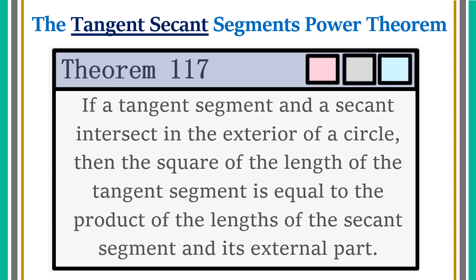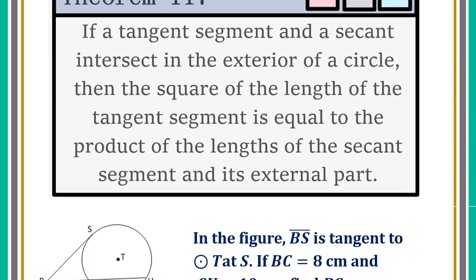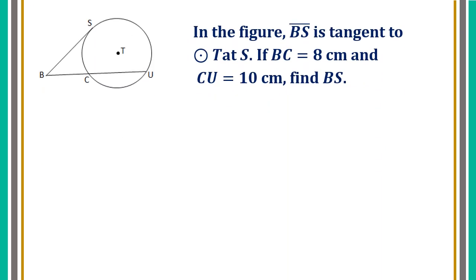Now, let us have sample illustration for this. In the given figure, we do have segment BS here. This is considered as tangent segment because it intersects the circle T at point S. And we also have segment BU which intersects the given circle at exactly two points and therefore, we call it secant.